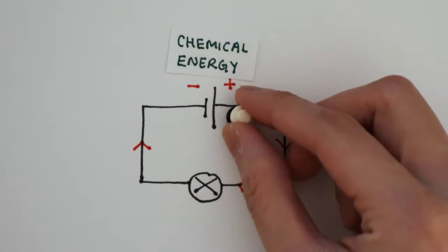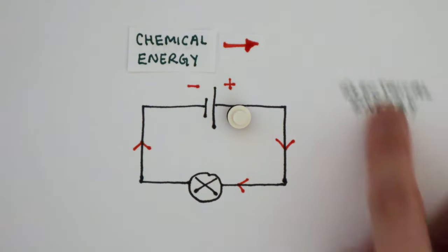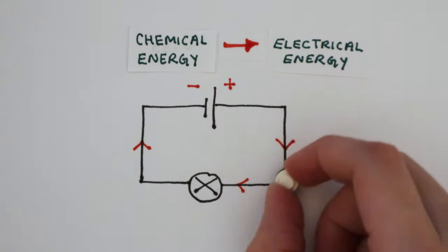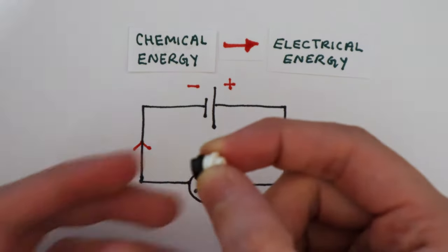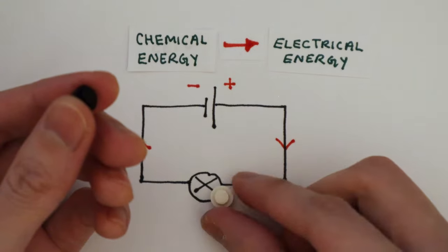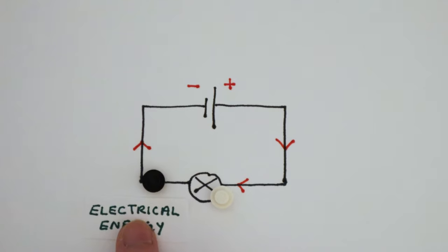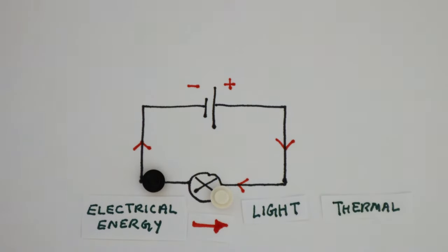The energy transfer from the cell to the electron is from chemical energy to electrical energy. When the electron passes through the light bulb, the electron gives up its energy to the bulb. This energy transfer is from electrical to light and thermal energy.